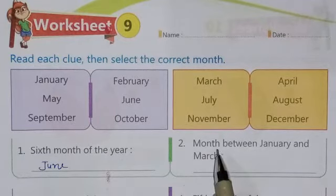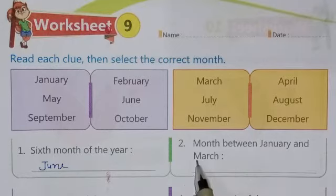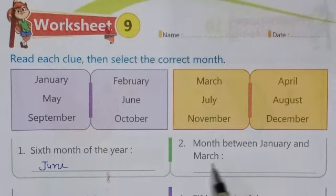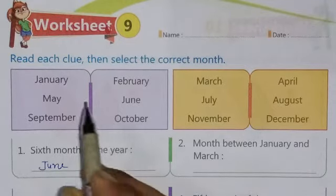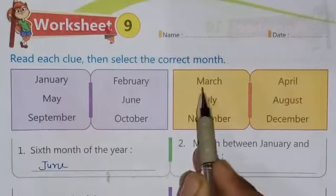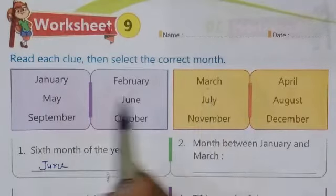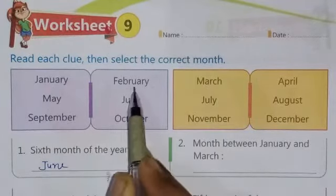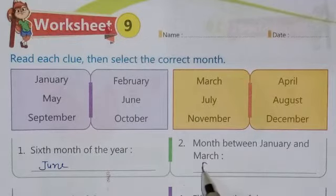The next question, number two: the month between January and March. It means which month comes between January and March. So checking — between January and March, the month is February. So write down February.